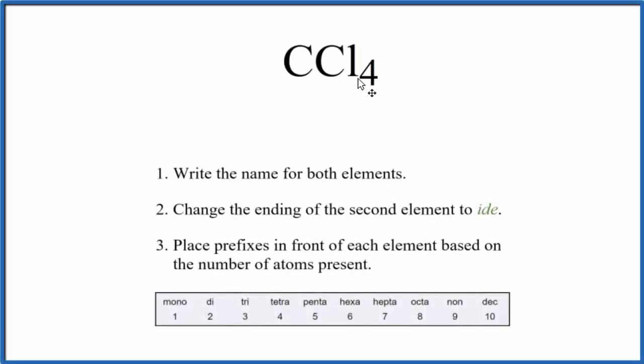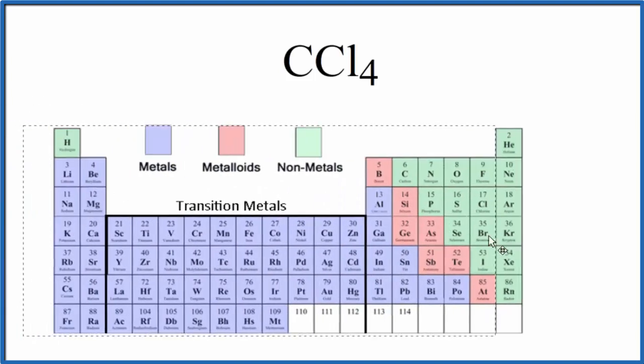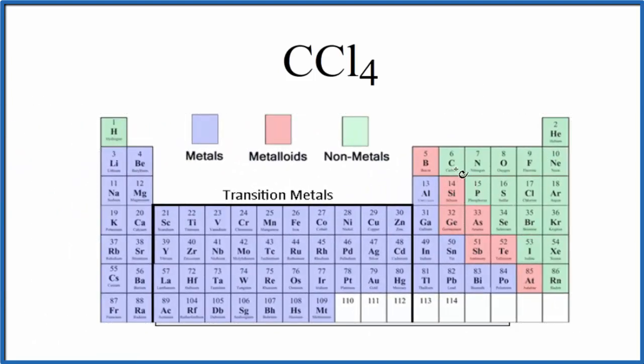To write the name for CCl4, we first need to figure out what type of compound we have. So if we look at the periodic table, we can find carbon right here.